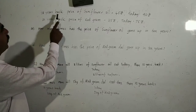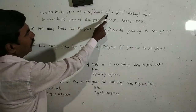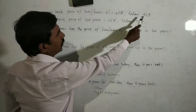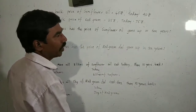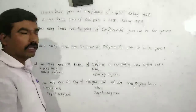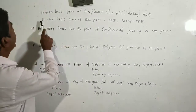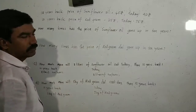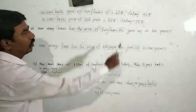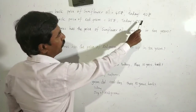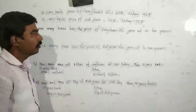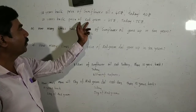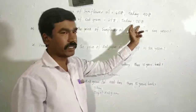10 years back price of sunflower oil is Rs. 45 per litre. Today it is Rs. 90 per litre. 10 years back price of red gram is Rs. 25 for kg. Today it is Rs. 75 per kg. Now, according to these prices — 10 years back prices and today's prices — we have to do problems A, B, C, D.